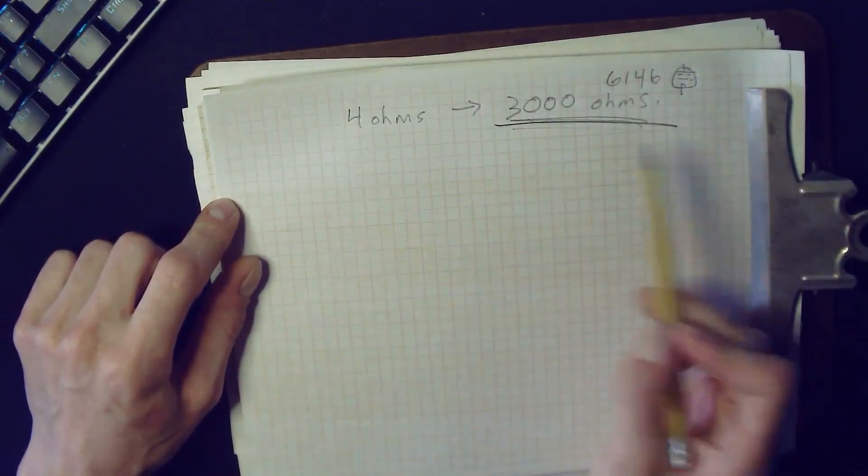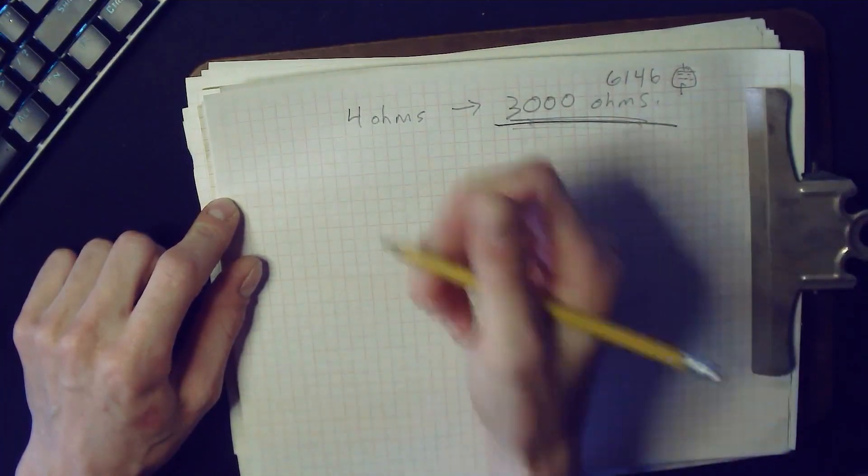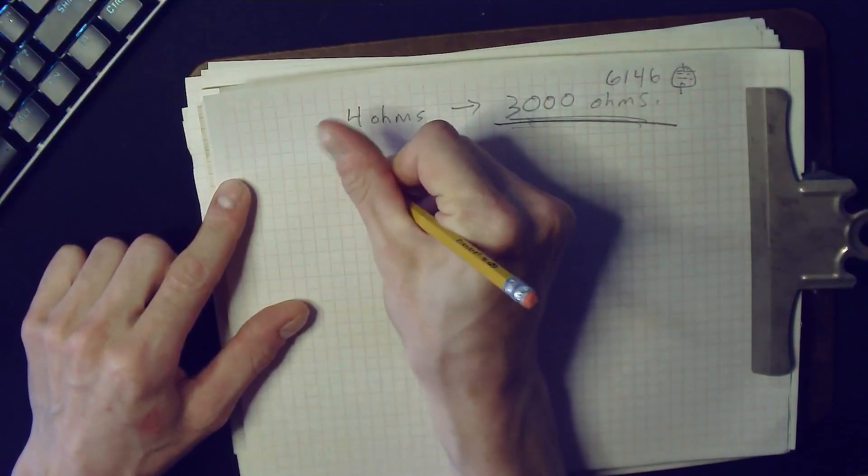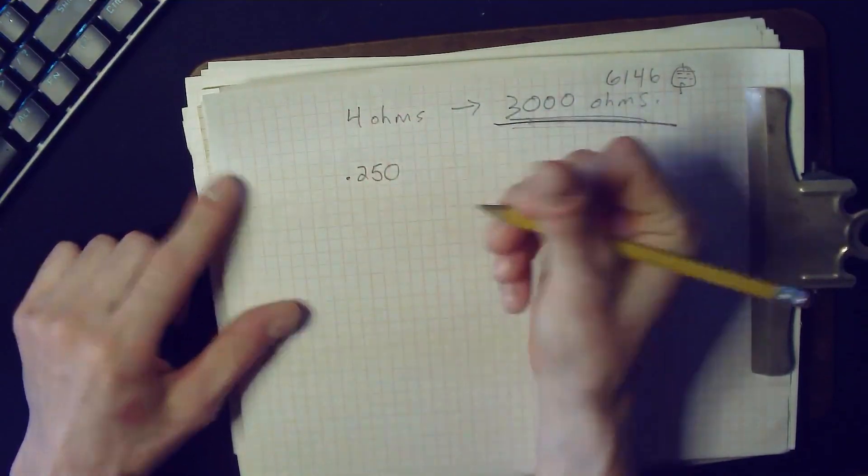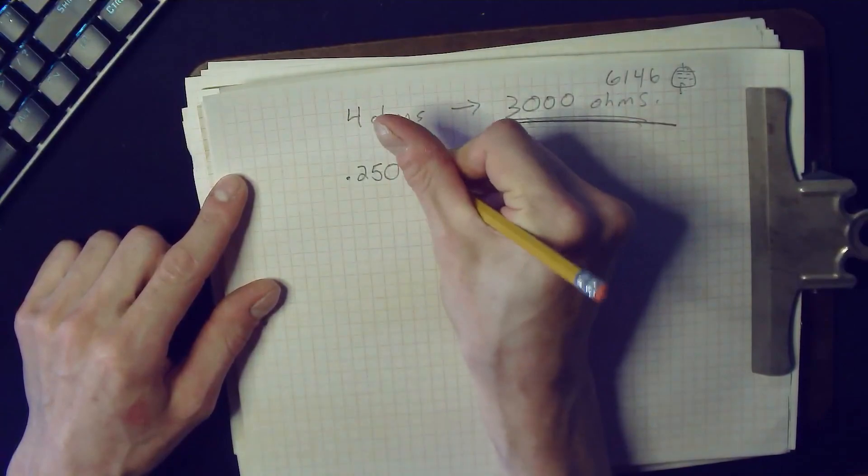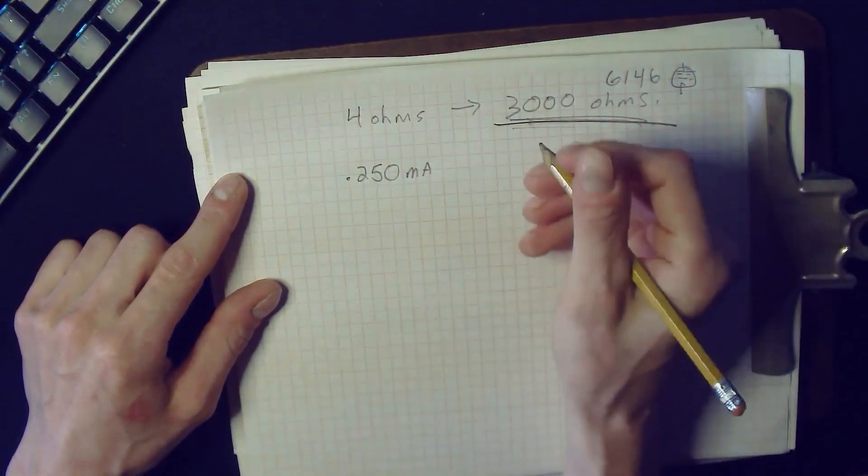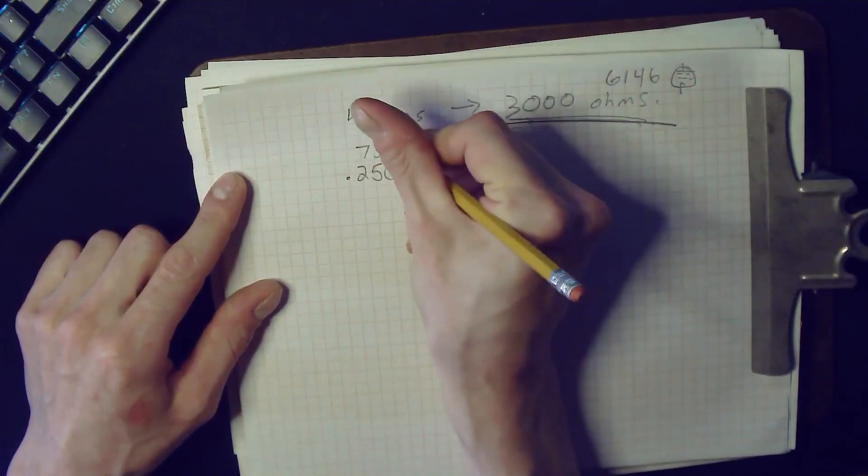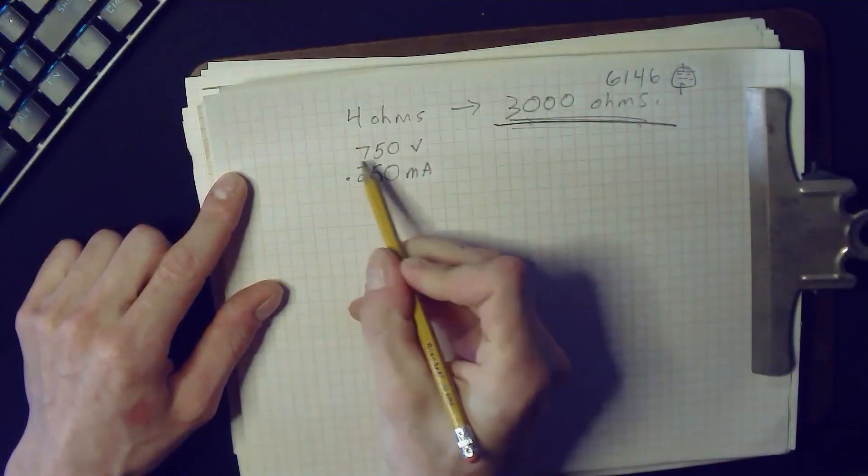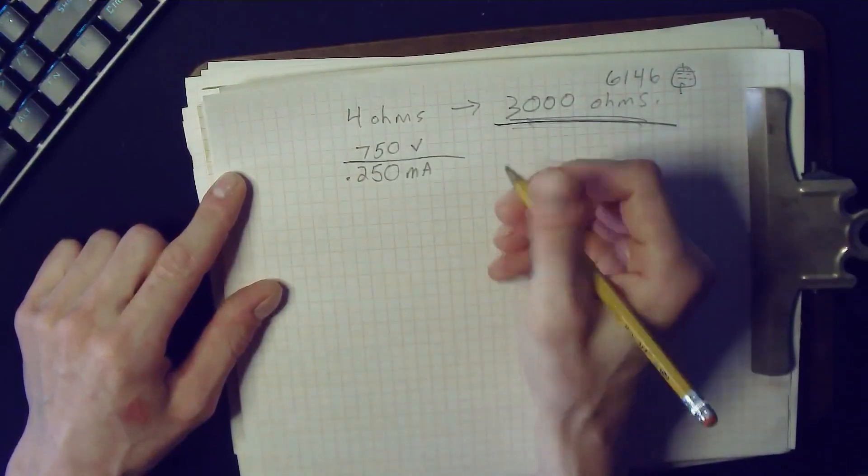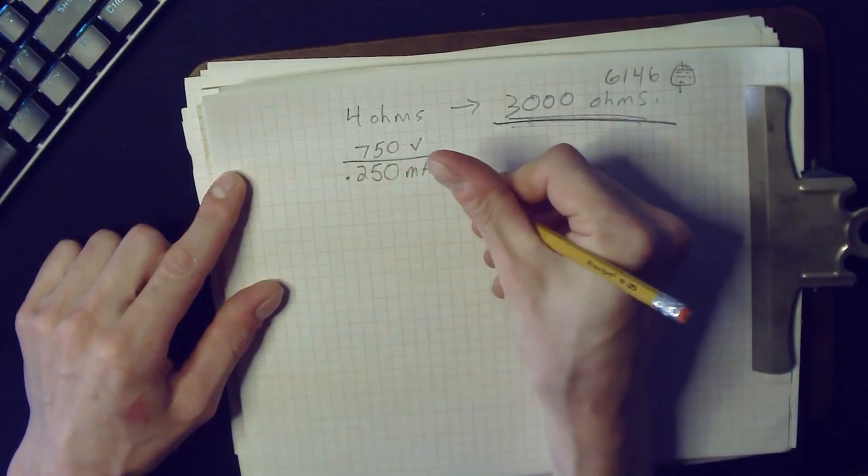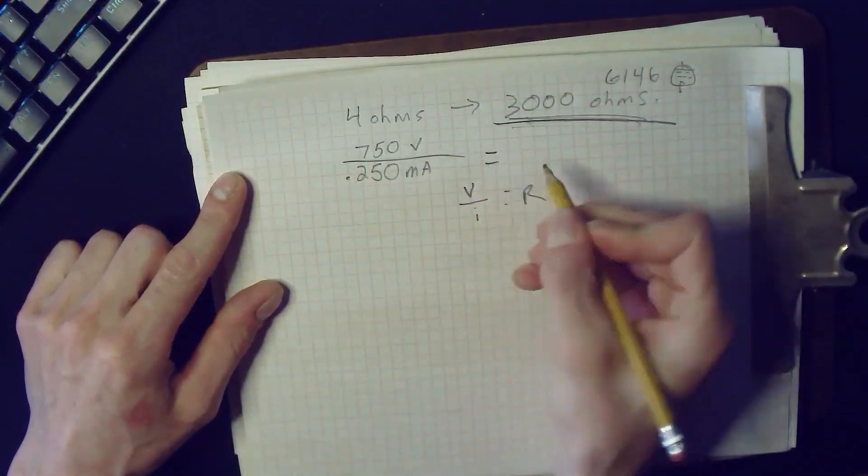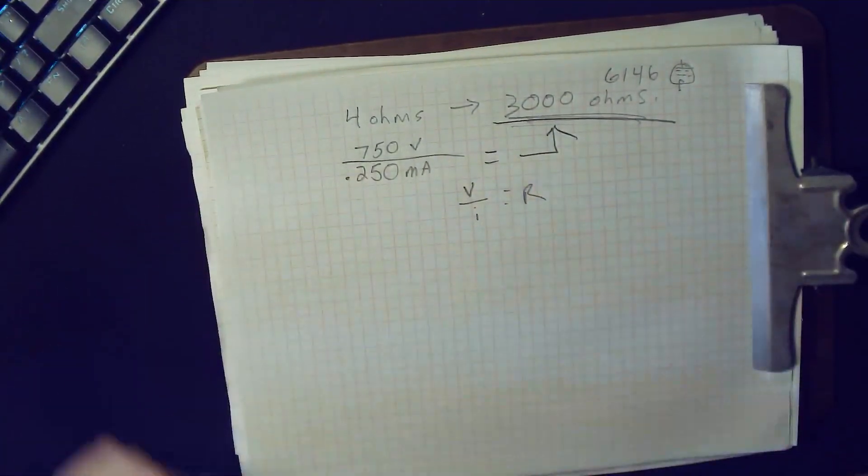The way that I figured out the modulating impedance of my 6146 finals is I just used Ohm's law. This was easy because I know that where I run that Viking 2, the plate current is about 250 milliamps and the plate voltage is about 750 volts. So we divide using Ohm's law—V over I equals R. This is going to give us 3000 ohms.